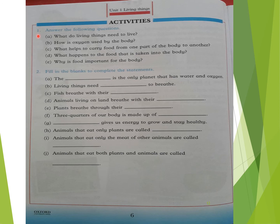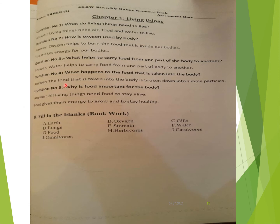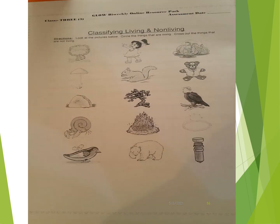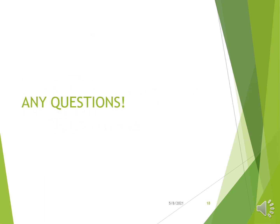Turn to page number 6. You can see the exercise pages — pages 6 and 7. You have to complete these on your notebook, as they have already been given to you on your assignment papers. Assignment pages 1 and 2 — also do these pages on your notebook. Solve the book exercise, write question answers from your assignment on your homework copy or notebook, and solve the assignment pages given. Any questions? Thank you.